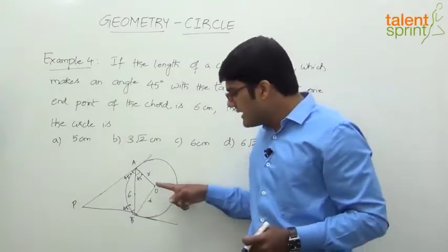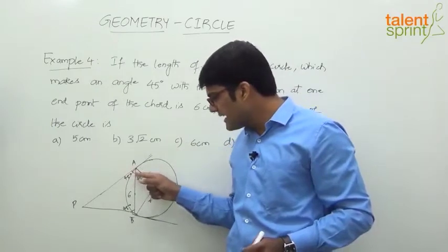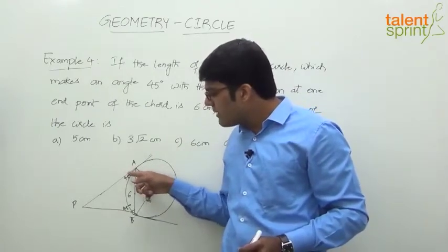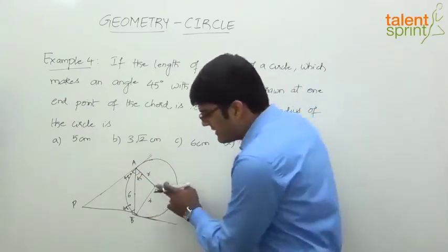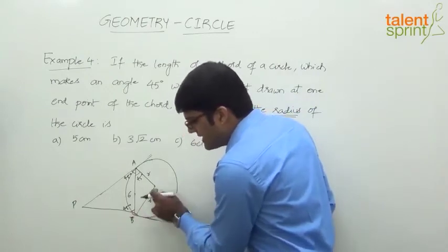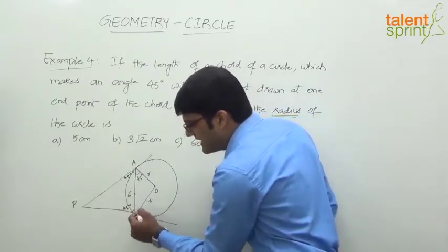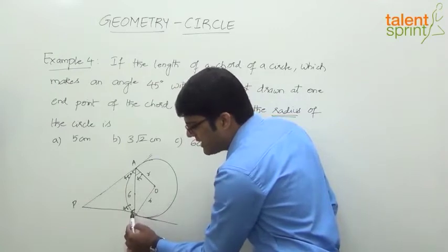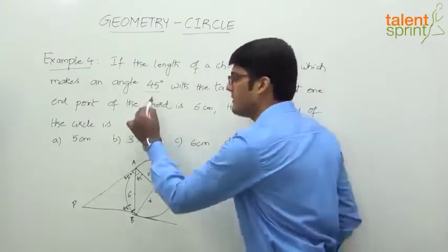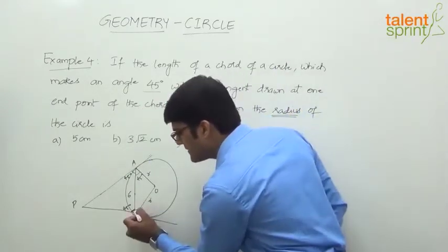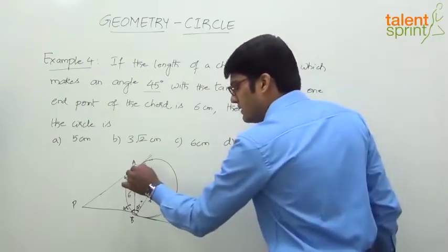The radius makes an angle of 90 degrees with the tangent at the point of contact. At point A, 45 degrees is covered by the chord, so the remaining angle between OA and AB is 45 degrees. The same applies at point B — PB is the tangent, OB is the radius, the angle between PB and OB is 90 degrees, and 45 is covered by the chord, leaving 45 degrees between OB and AB.